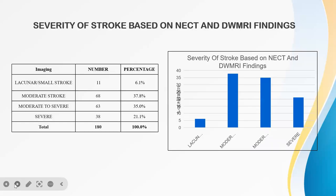Severity of stroke based on non-enhanced CT and DWI-MRI findings: around 11 cases showed lacunar or small stroke, around 68 cases showed moderate stroke, 63 cases showed moderate to severe, and 38 cases were severe.